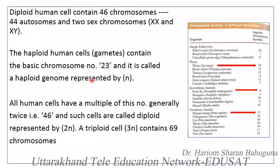This is called the haploid genome, represented by N. All human cells have a multiple of this number. Generally every cell is diploid, so there is the 2N number of chromosomes per cell, and hence the number is 46. However, certain cells are triploid or hexaploid — such as some liver cells — and may have a multiple of this basic set of chromosomes.